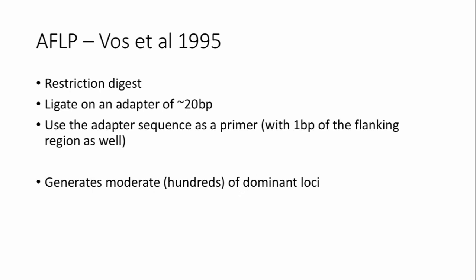Another technique that exists is called the amplified fragment length polymorphism. This is sort of a hybrid approach where you do a restriction digest, then you add an adapter of about 20 base pairs that you can use as a primer sequence. And this allows you to assess variation in whether or not individuals have that restriction digest site or a difference in the base pair next to that digest site. And what this generates is hundreds of dominant loci that differ among individuals.